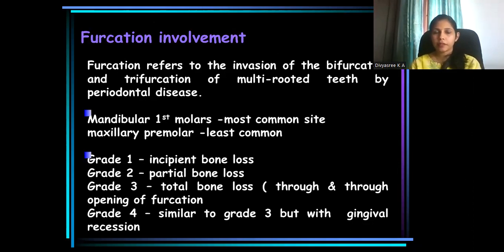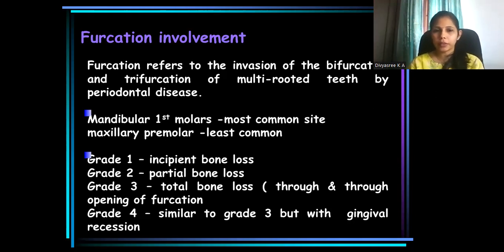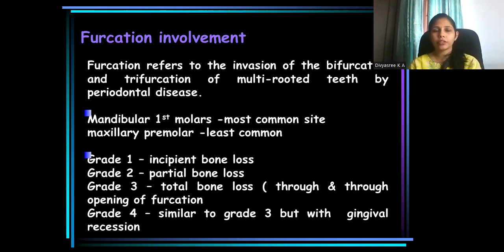Then, furcation involvement — the involvement of the furcation area by periodontal disease. It can be either bifurcation or trifurcation of a multi-rooted tooth, more commonly seen in mandibular molars. They have been graded according to the degree of involvement.